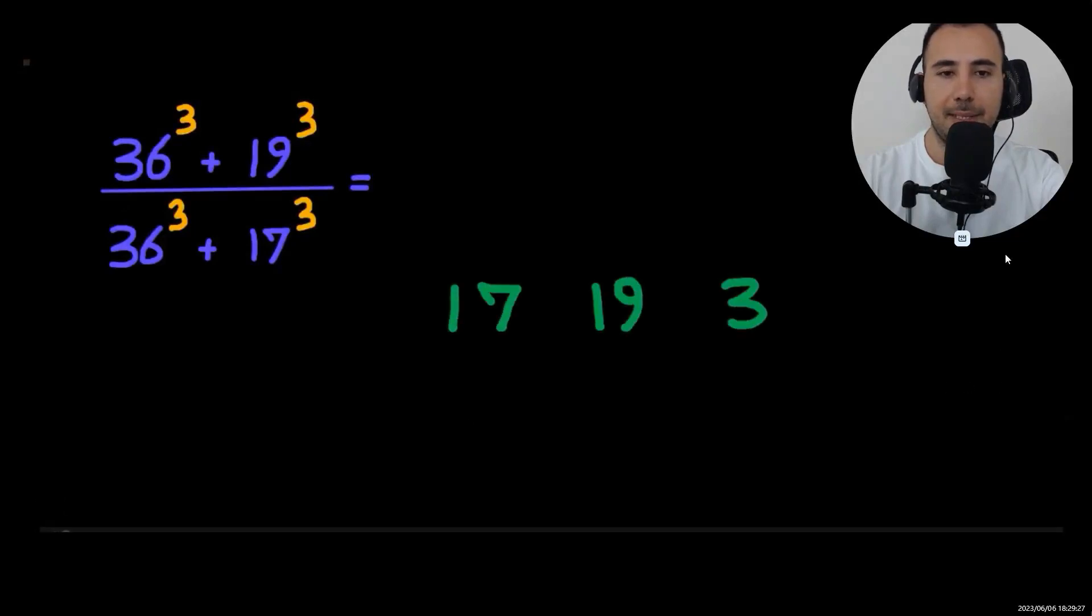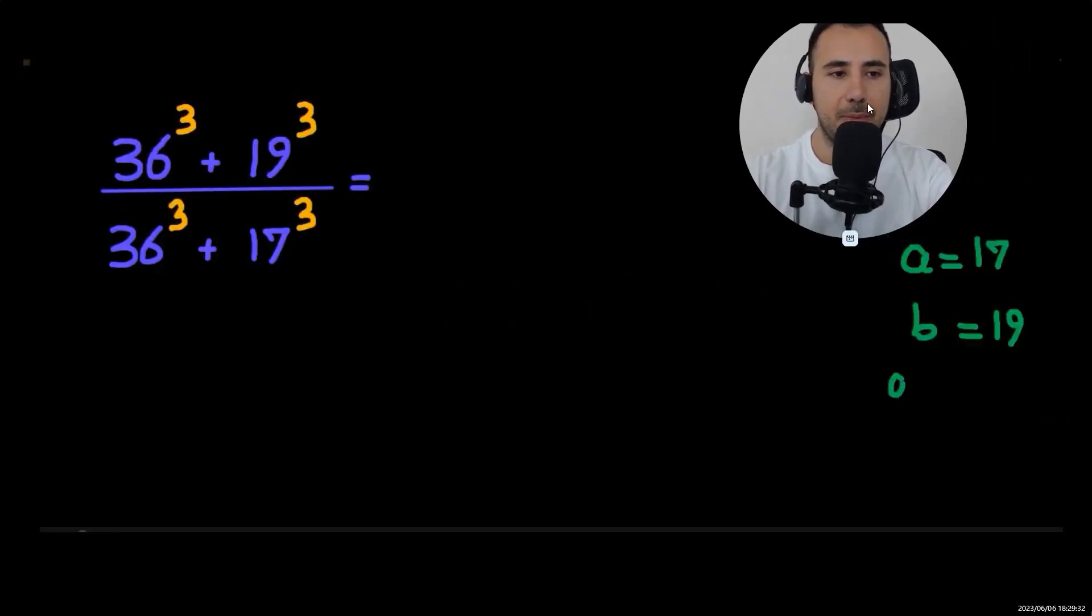What is it? 17 plus 19 is 36. We're going to use that. Let a be 17, b be 19, and a plus b equals 36.